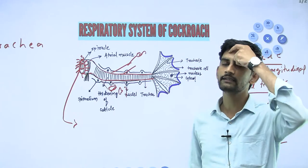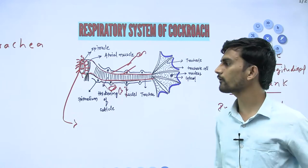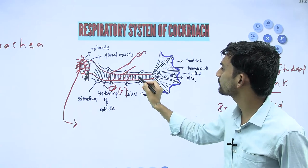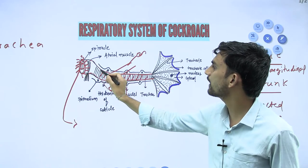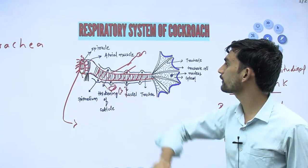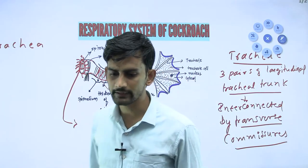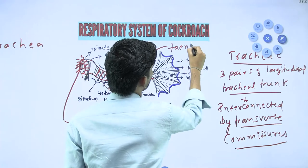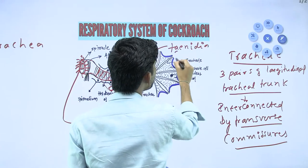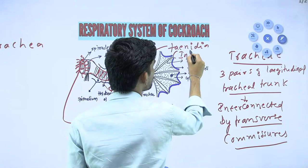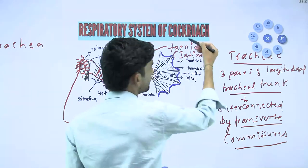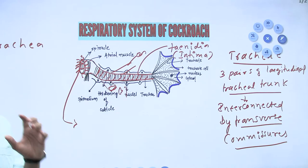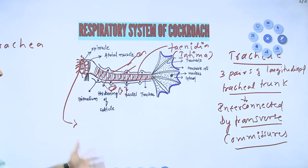An important feature of the trachea is the presence of small straightened structures - cuticular thickenings called taenidia, also known as intima. These are spiral thickenings of the cuticle on the inner wall of the trachea.